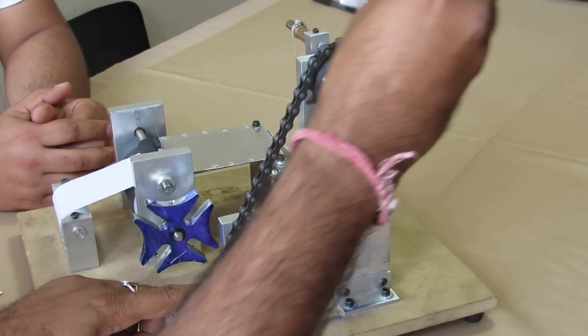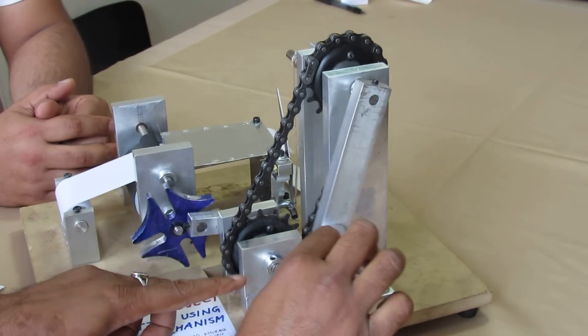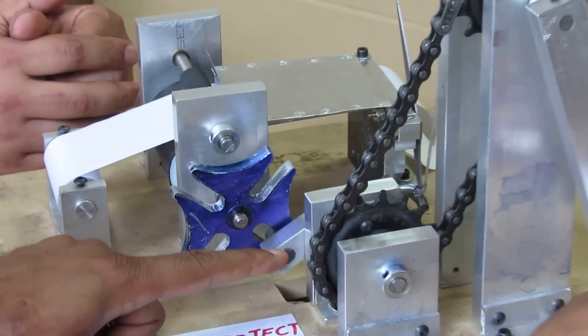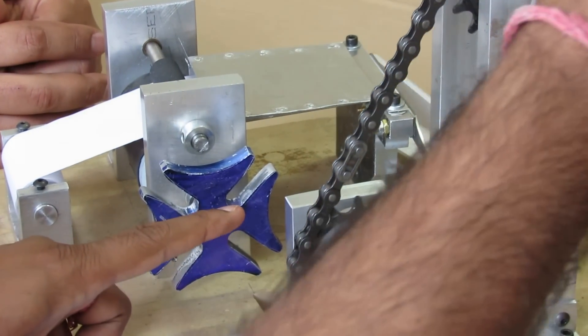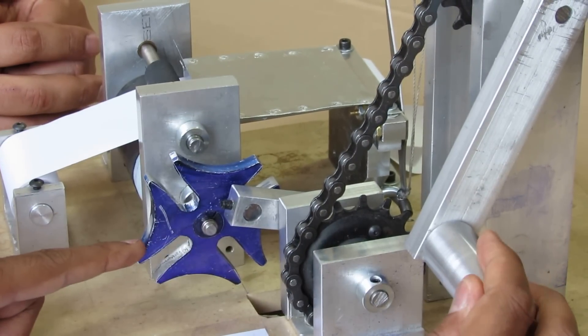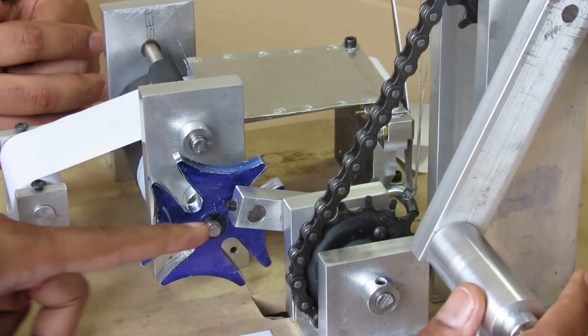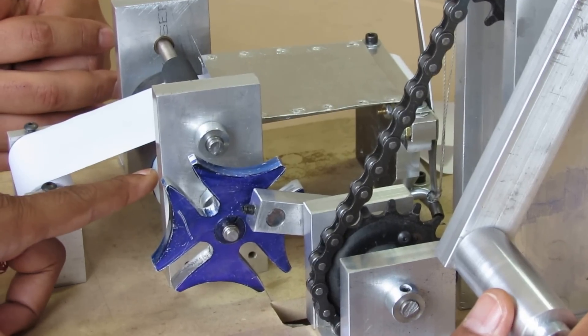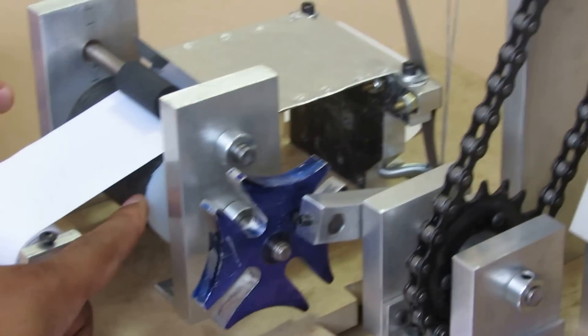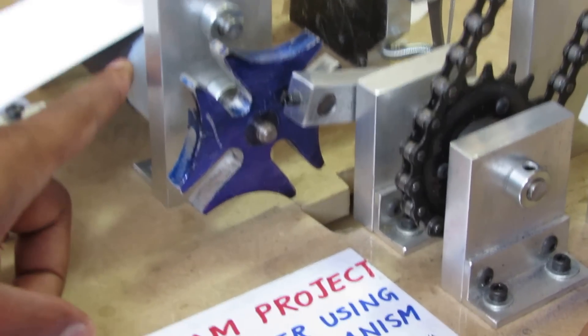When this sprocket is moved here, this pin is engaged in the Geneva wheel. So for one turn of the pin, the Geneva rotates a quarter turn because the Geneva has four slots in it. This motion is transferred through this shaft to this paper roller. So the paper moved is only one quarter of the circumference of the paper roller.